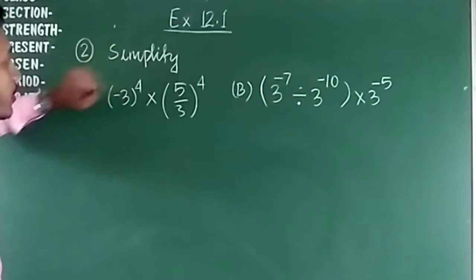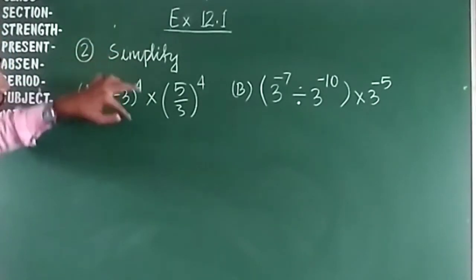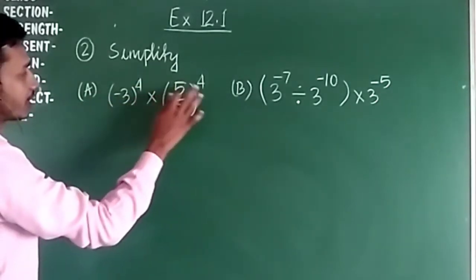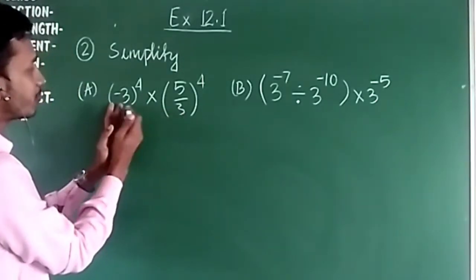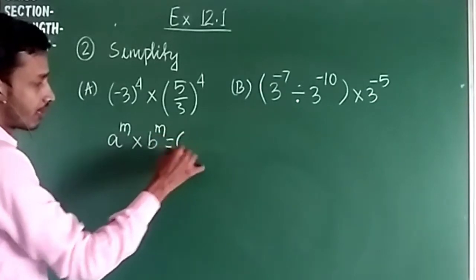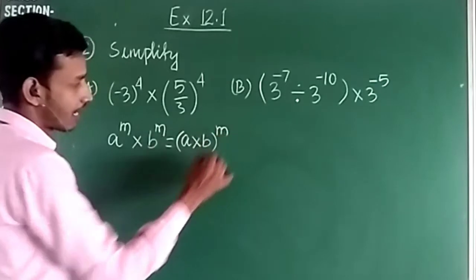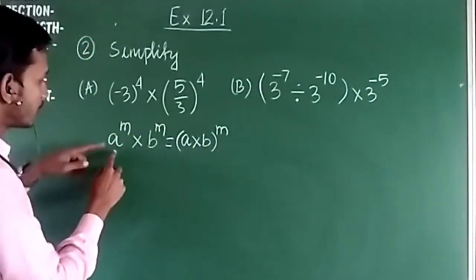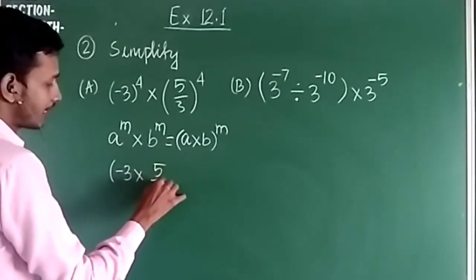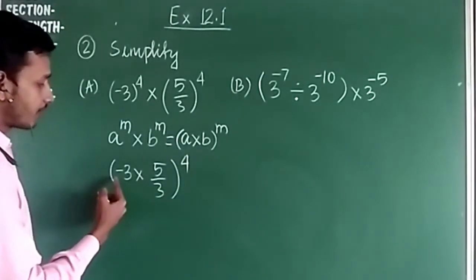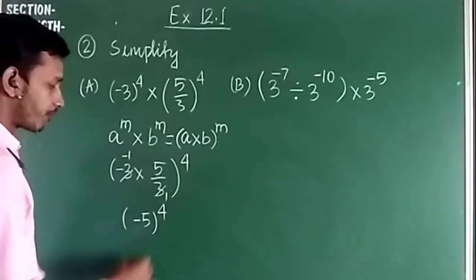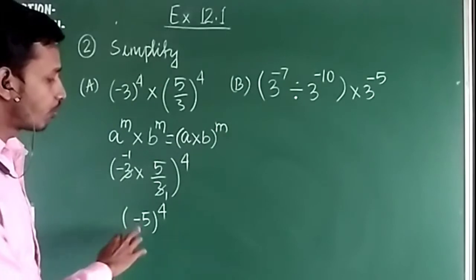The second question is simplification. Simplify (minus 3/4) to the power 4 multiplied by (5/3) to the power 4. Here the powers are the same and the bases are different. When powers are the same, we multiply the bases and write the common power. So this becomes minus 3 multiplied by 5/3, raised to the power 4. The 3's cancel, giving minus 1 × 5, so the answer is minus 5 to the power 4.